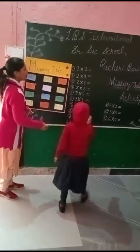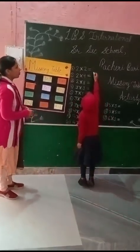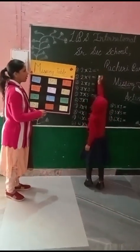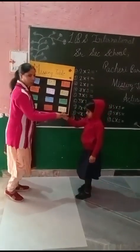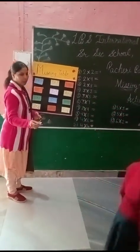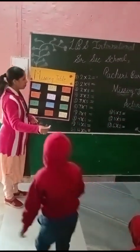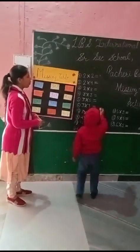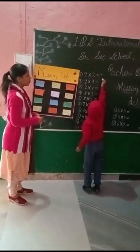Two multiply two. Four. Next. Two multiply four. Eight.